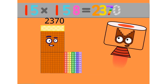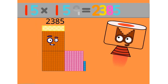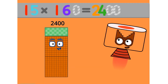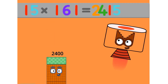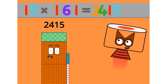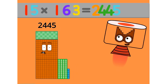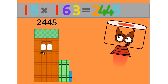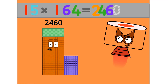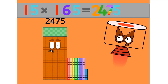15 times 158 equals 2370. 15 times 159 equals 2385. 15 times 160 equals 2400. 15 times 161 equals 2415. 15 times 162 equals 2430. 15 times 163 equals 2445. 15 times 164 equals 2460. 15 times 165 equals 2475.